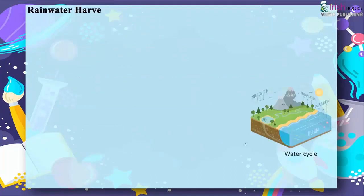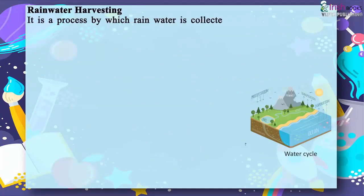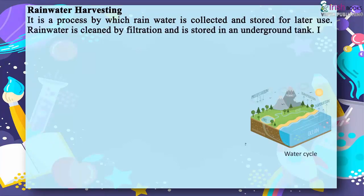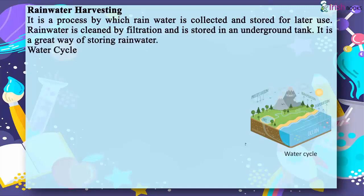Rainwater harvesting. It is a process by which rainwater is collected and stored for later use. Rainwater is cleaned by filtration and stored in an underground tank. It is a great way of storing rainwater.